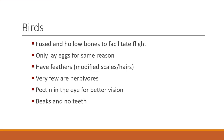Birds are another type of animal that's very important on rangelands. They include animals that have hollow bones, lay eggs, and have feathers. They also have no teeth, so they have to find a different way to harvest food.